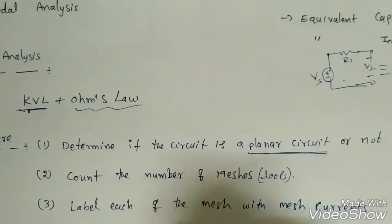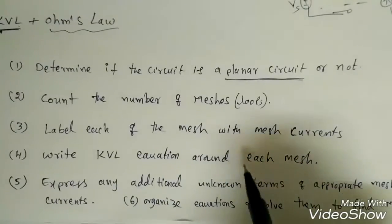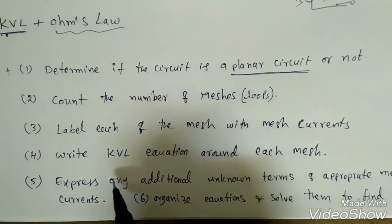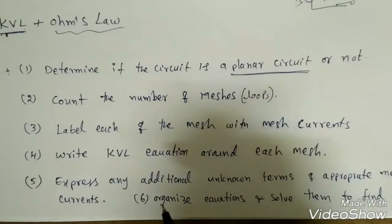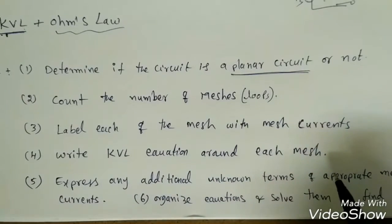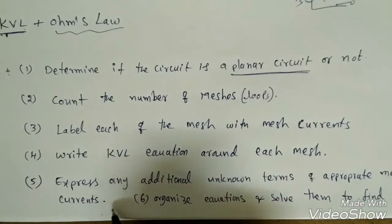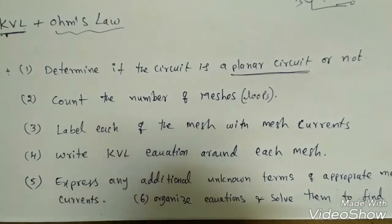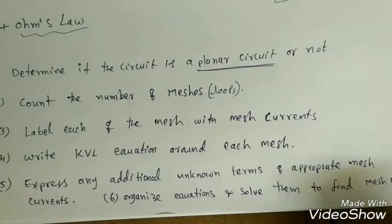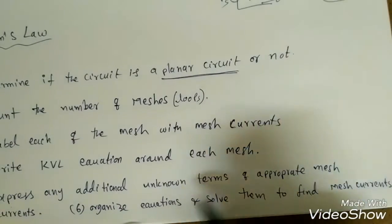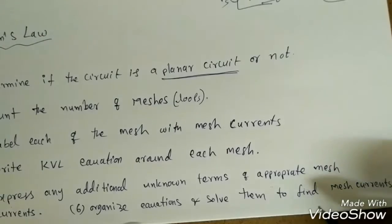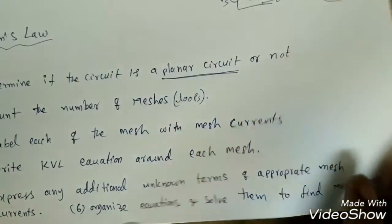Once the mesh currents are labeled, write the KVL equation around each mesh. If there are any dependent sources, express them in terms of the mesh currents, which may require additional unknown terms. Finally, organize the equations and solve them to find the mesh currents. From the mesh currents, we can then find required voltages or power.